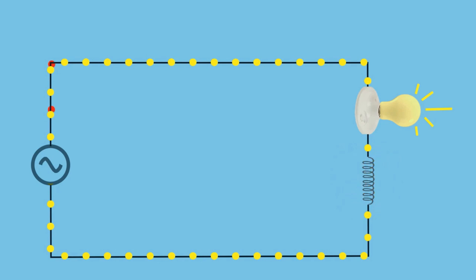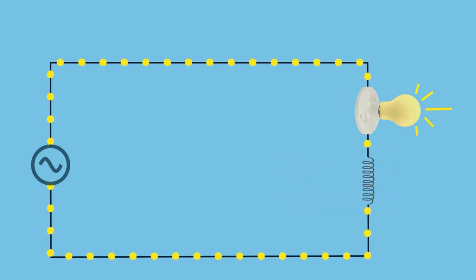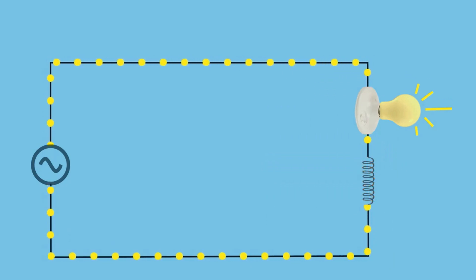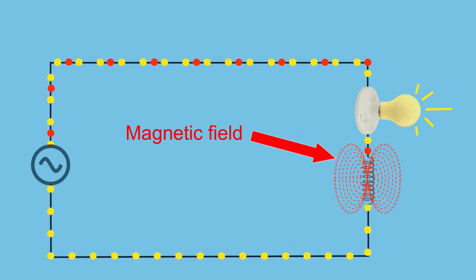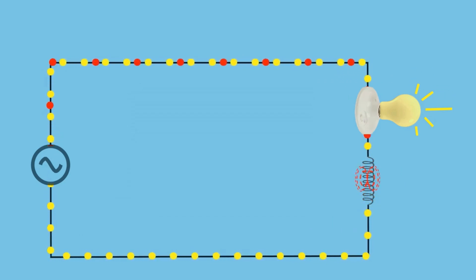So again, the yellow dots represent active power while the red dots represent reactive power. Reactive power does not perform any work. It's more like borrowed energy that's temporarily stored in an inductor's magnetic field before being returned to the source. Only the active power, represented by the yellow dots, is performing actual work.